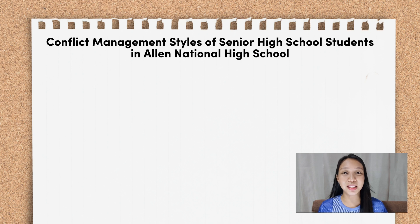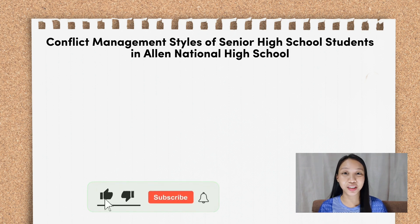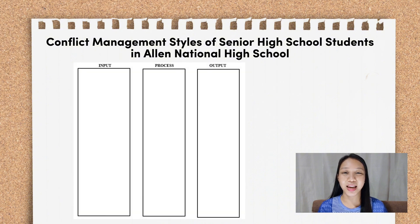Now that we have already laid down the research questions, we will start making the paradigm of the study. The research questions should complement or run parallel with the paradigm of the study. So, here it goes. In the first figure, you have to label it as input. Then in the second one, process. And the third one, output.